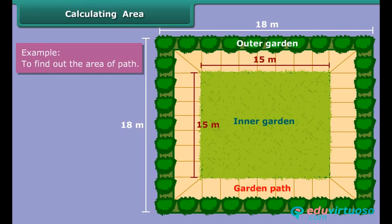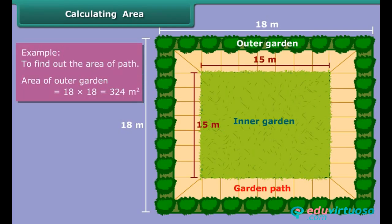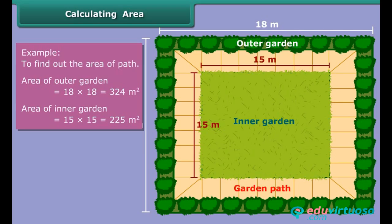To do so, calculate and deduct the area of the inner garden from the area of the outer garden. Area of the outer garden is 324 meters square, and area of the inner garden is 225 meters square.